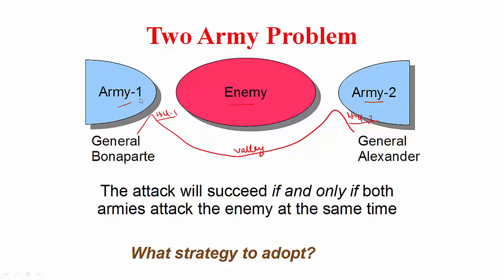This enemy is rather large, so the attack from the blue army will succeed only if both battalions attack together. If only one of them attacks, they will get butchered. Both army one and army two need to decide on when to attack the red army, and the messenger who carries this communication has to go through the valley, where there is a danger the messenger could be captured by the enemy. What strategy should they adopt to ensure that they both attack at the same time?